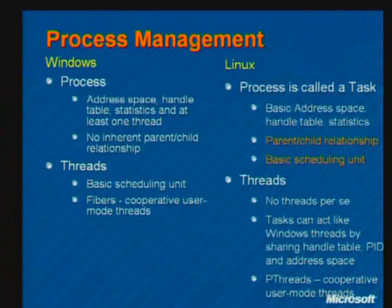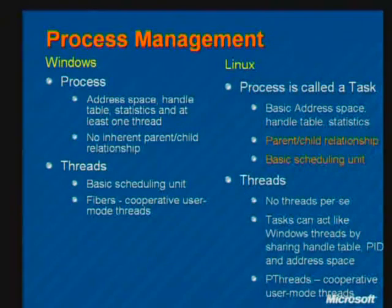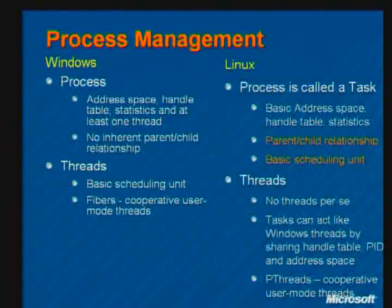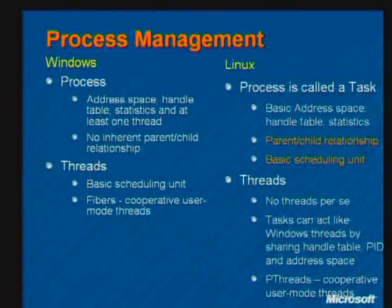On Linux, you can have a task composed of multiple tasks all sharing the same address space and handle table. But if a task creates another task and specifies sharing nothing, that new task looks like a new Windows process with one thread. The system call used to create a new task is called clone, and it specifies which aspects of the parent the child will share. A task creating another task that shares nothing is equivalent to creating a new process; sharing everything is equivalent to creating a new thread.